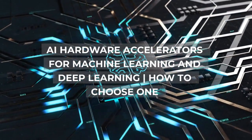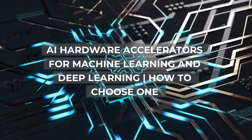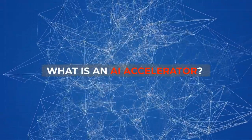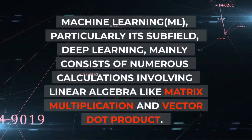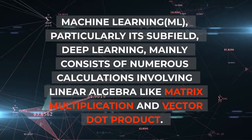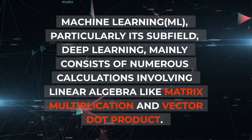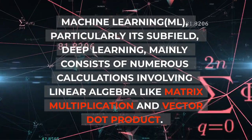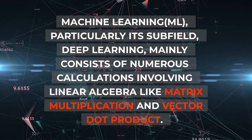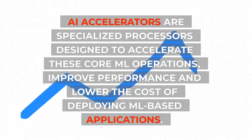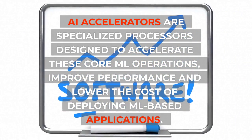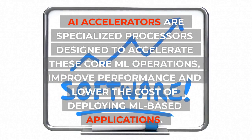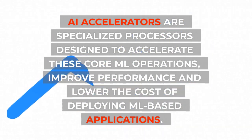AI Hardware Accelerators for Machine Learning and Deep Learning — how to choose one? Machine learning, particularly its subfield deep learning, mainly consists of numerous calculations involving linear algebra like matrix multiplication and vector dot product. AI accelerators are specialized processors designed to accelerate these core ML operations, improve performance, and lower the cost of deploying ML-based applications.